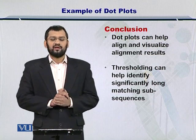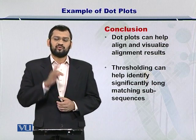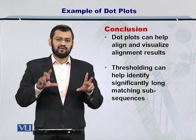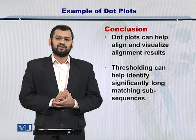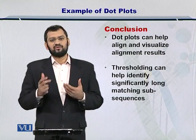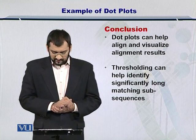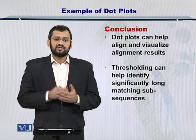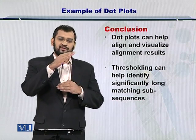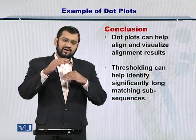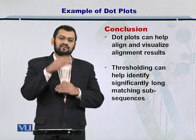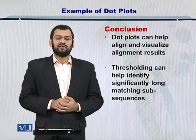In conclusion, dot plots help you to align and visualize the alignment between two biological sequences. The sequences can be protein sequences or DNA or RNA sequences. Thresholding can help you identify the longer diagonals within the dot plot — by increasing the threshold, you can reduce the number of diagonals that remain in the plot.